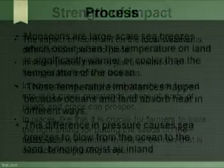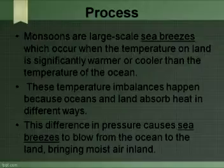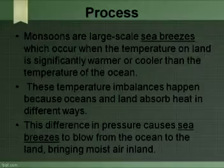Monsoons are large-scale sea breezes which occur when the temperature on land is significantly warmer or cooler than the temperature on the ocean. These temperature imbalances happen because oceans and land absorb heat in different ways. During warmer months, sunlight hits the surfaces of both land and ocean, but land temperatures rise more quickly.